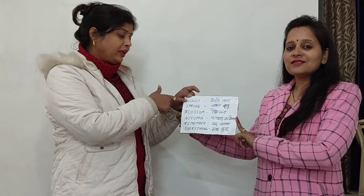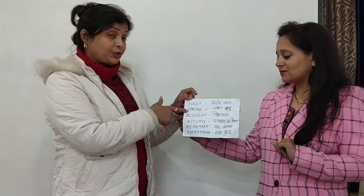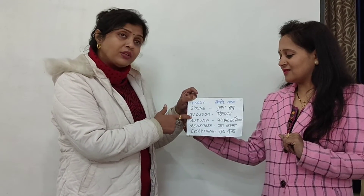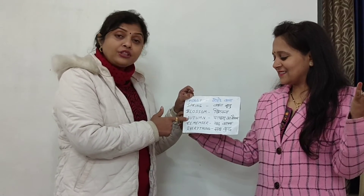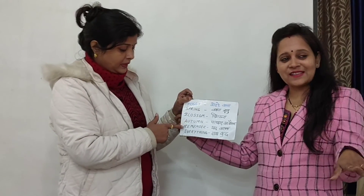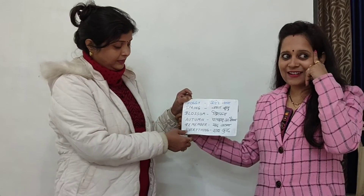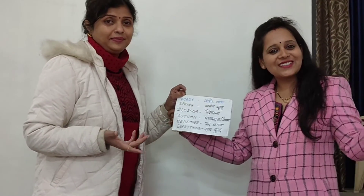Now we will learn the hard words. Foggy means kohrewaara. Spring — basantreto. Blossom — khilna. Autumn — patjhad ka mausam. Remember — yaad karna. Everything — sab kuch. Now we will learn all the happy seasons.